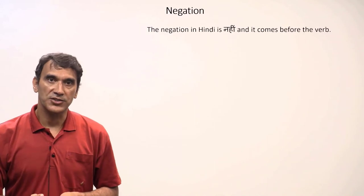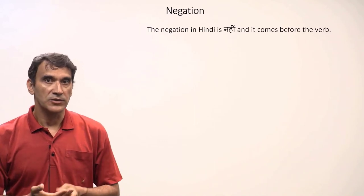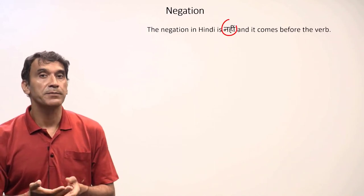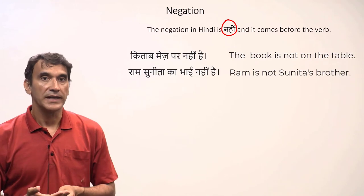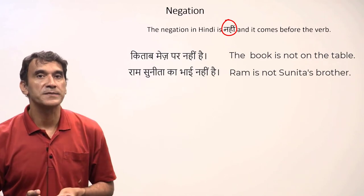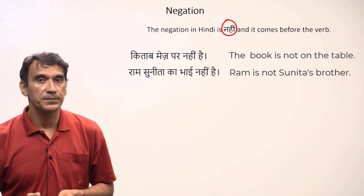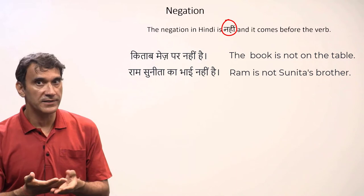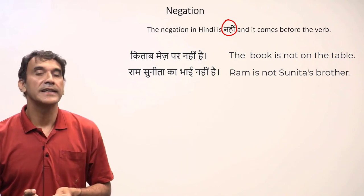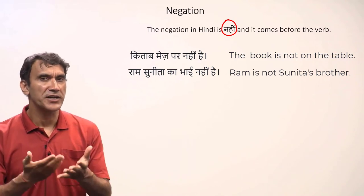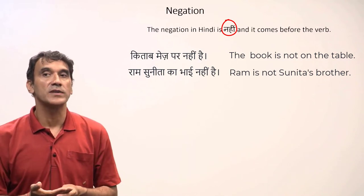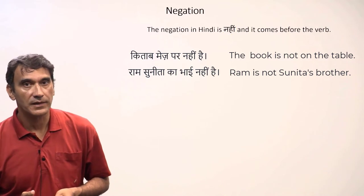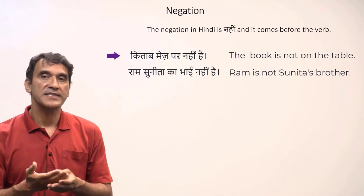The next grammar point is negation. To negate a sentence in Hindi, the negative particle 'nahi' is used. It usually comes before the verb. The Hindi word order has the verb at the end of the sentence, which means the negation 'nahi' comes towards the end of the sentence, just before the verb. Here are some examples.